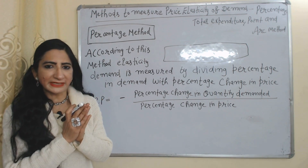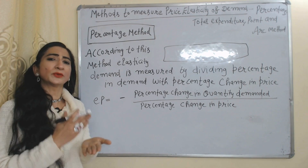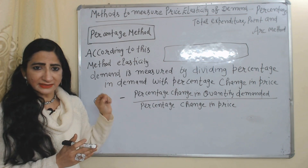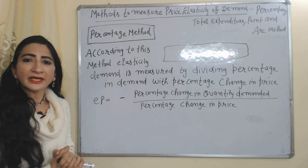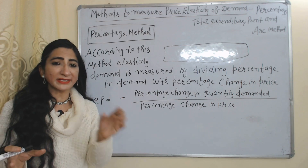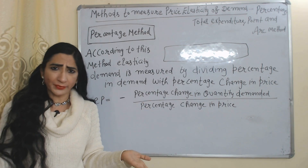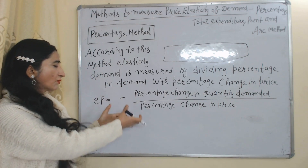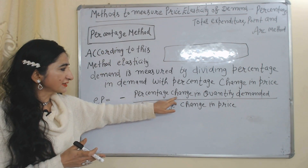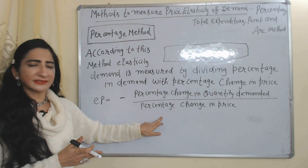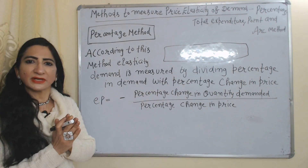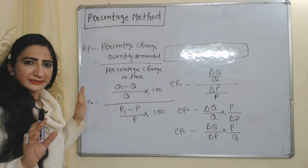First, we are going to talk about the percentage method. According to this method, we can calculate price elasticity of demand by dividing percentage change in demand by the percentage change in price. Here you can see the formula: percentage change in quantity demanded over percentage change in price. We have a minus sign because demand and price have a negative relation.